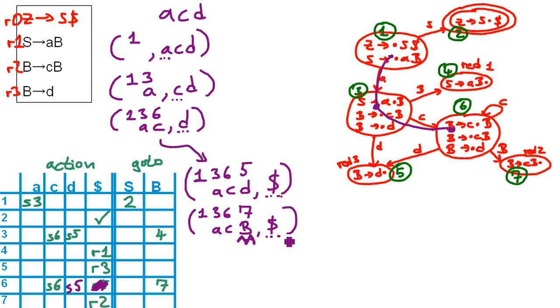And we have the input dollar, so the end of input. We have a reduction by rule number two, which will reduce CB to AB. So it's going to be like this.